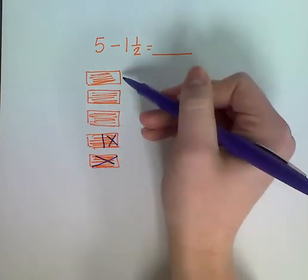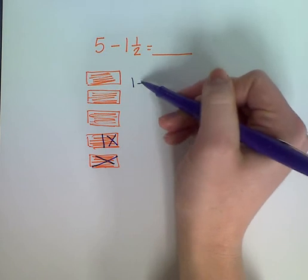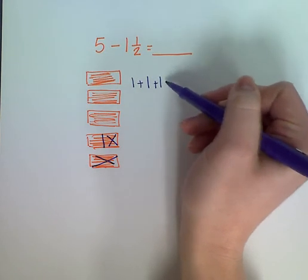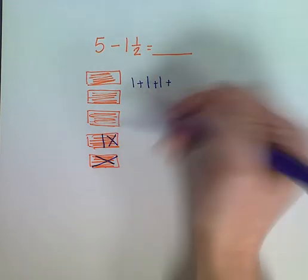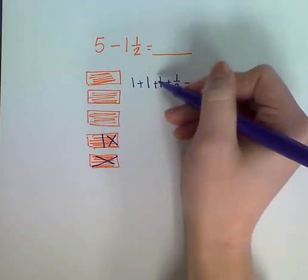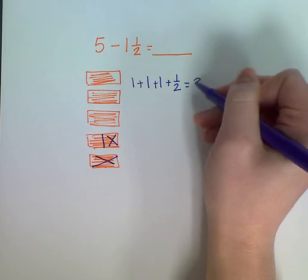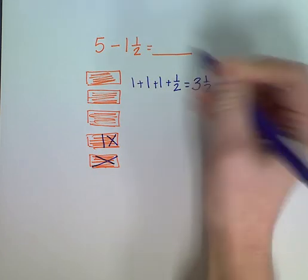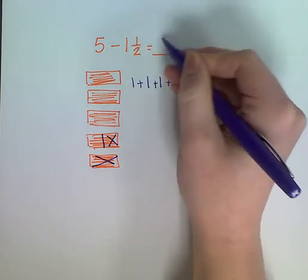So now I have one whole, plus one whole, plus one whole, plus one half. And that equals one plus one is two, plus one more is three and a half. So five take away one and a half equals three and a half.